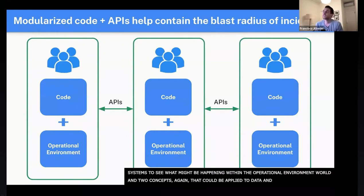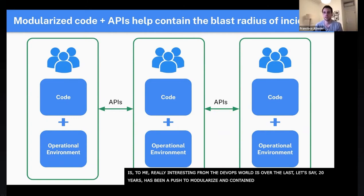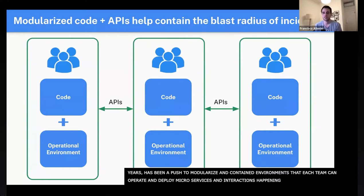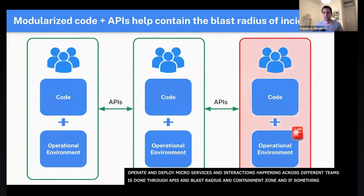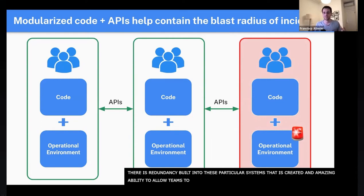Another interesting aspect from the DevOps/SRE world is that over the last 20 years, there's been a push to modularize and create contained environments where each team can operate and deploy their microservices, with all interaction across teams done via APIs. This creates a blast radius — a containment zone — where if something happens in one team's operational environment, the whole app isn't going down. There's a lot of redundancy built in, which gives teams the ability to deploy code and ship features quickly, knowing they won't cause catastrophic failure across the organization.